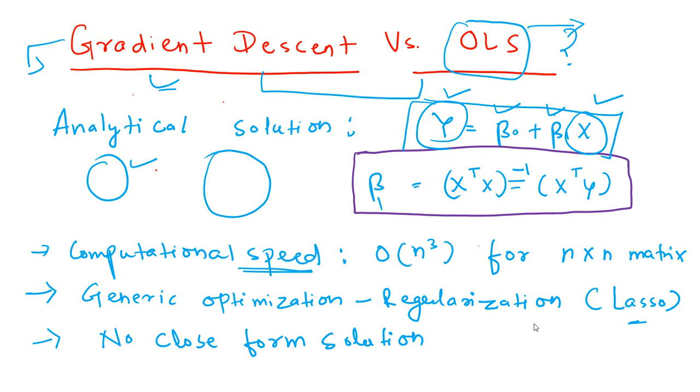Let's say you have one million independent variables. Statistical models or econometric models, you will never find such a large number of independent variables used in a model. But in the real world, specifically for prediction problems, you use a very large number of independent variables or features.